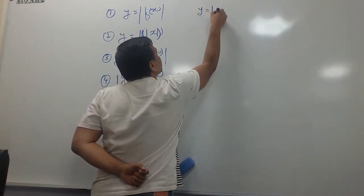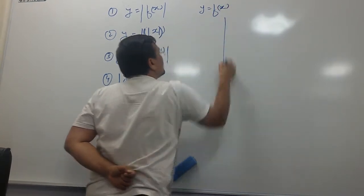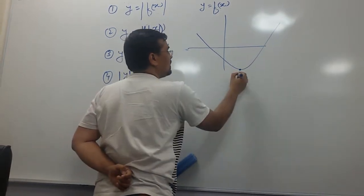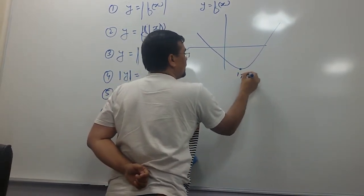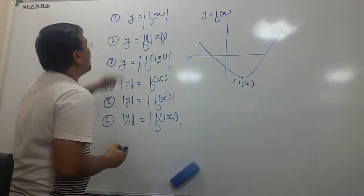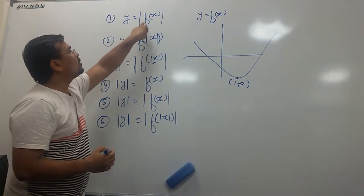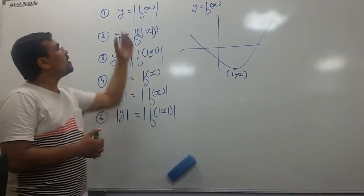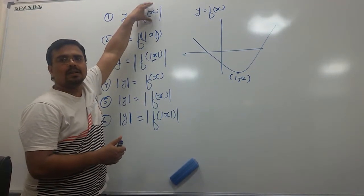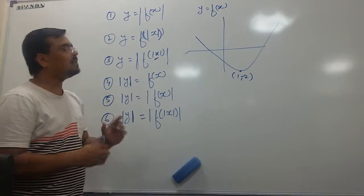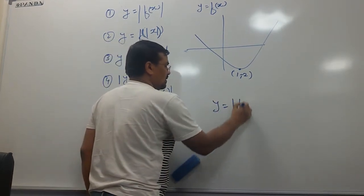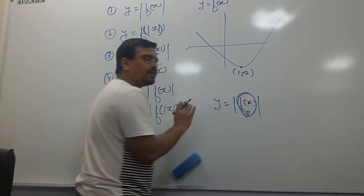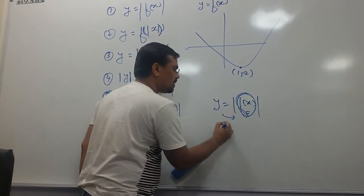If a function y equal to f(x) looks like this — let's say there is some function — how to draw the graph of y equal to absolute value of f(x). Just now we discussed that whatever is inside absolute value results in positive. It means whether f(x) is positive or negative, my y would always be positive.